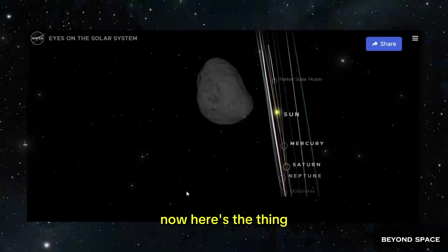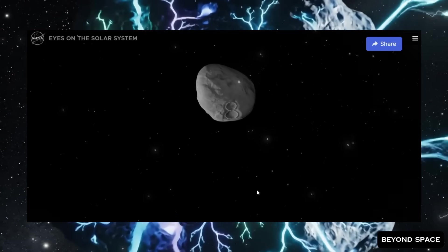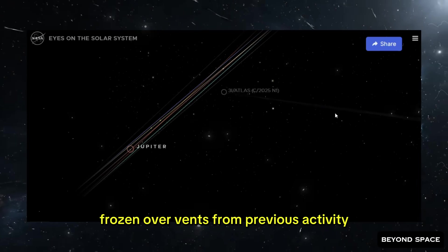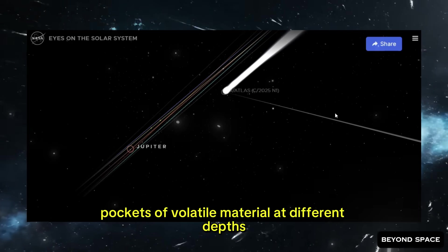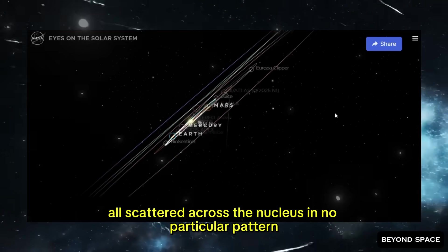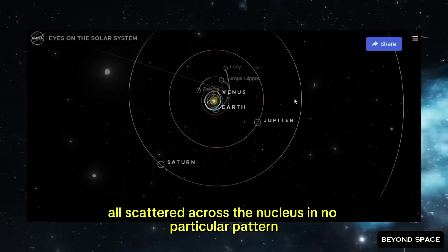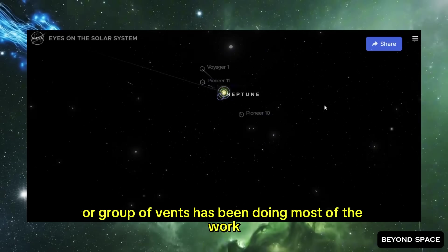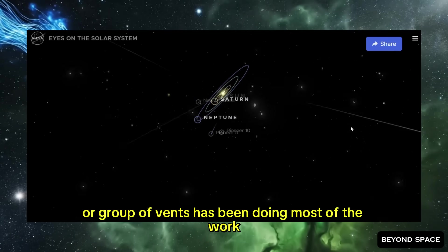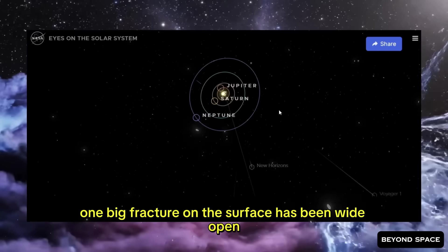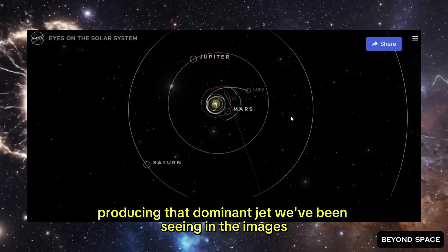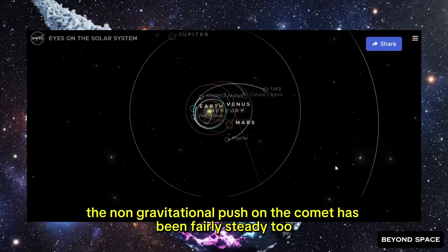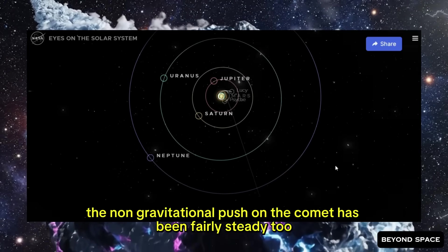Now, here's the thing. The surface of 3i Atlas is probably like a patchwork of different features. You've got sealed-up fractures, frozen-over vents from previous activity, pockets of volatile material at different depths, all scattered across the nucleus in no particular pattern. For the last several months, it looks like one particular vent or group of vents has been doing most of the work. One big fracture on the surface has been wide open, venting steadily, producing that dominant jet we've been seeing in the images.